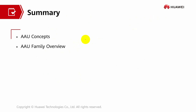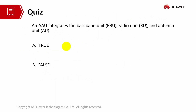That's all for part 7. We discussed the AAU concepts and the AAU family overview. Quiz question: An AAU integrates the baseband unit, radio unit, and antenna unit — true or false? The answer is false. Thank you, that's all from me. Have a nice day. Bye.